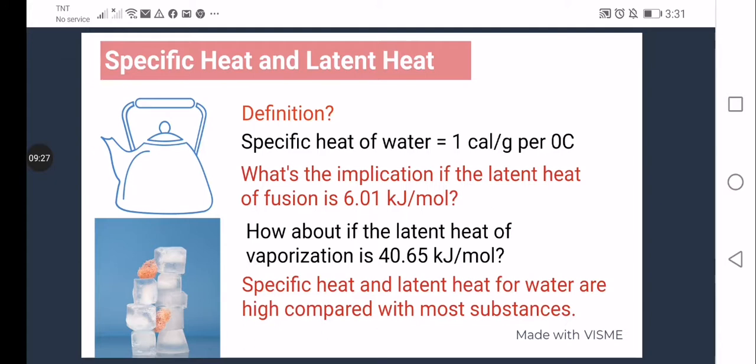So specific heat is the amount of heat required to raise the temperature of a kilogram of a particular material by one degree Celsius. While for the latent heat of water, it can be latent heat of fusion or latent heat of vaporization. Latent heat of fusion is the amount of energy required to convert one gram of ice to water without temperature changes. While the latent heat of vaporization is the energy required to convert one gram of water into vapor. Again, when we speak of specific heat, it involves raising the temperature. While when we speak of latent heat of fusion, it involves converting ice to water. And for the latent heat of vaporization, it involves converting water into vapor.